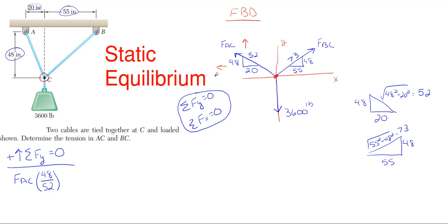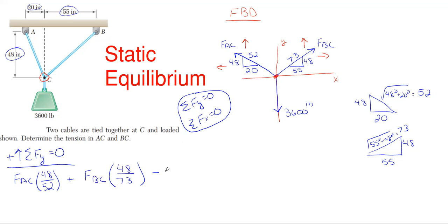FBC's components point up and to the right, so its Y component is also positive. Using the ratio: 73 in the denominator and 48 in the numerator, since 48 measures vertically. Then we have minus 3600 for the weight, since gravity always points downward. That completes the ΣFy equation. We can't solve for FAC or FBC from this equation alone.